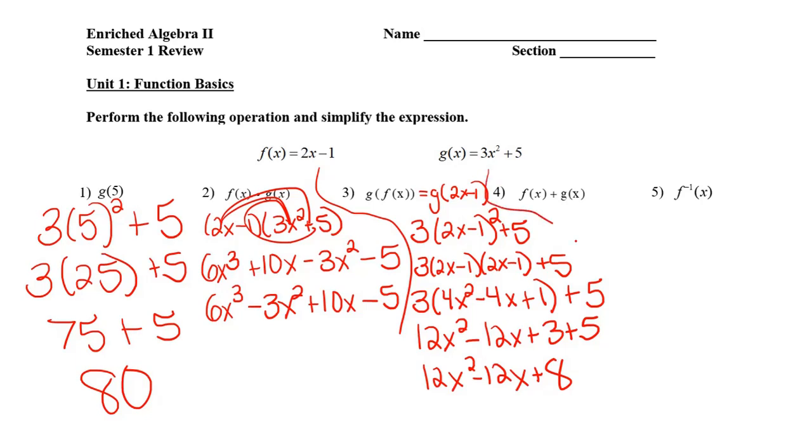Number 4, I need to add the two functions together. So I'm going to write the two functions, put a plus in the middle, and then I just need to combine some like terms. I'm going to put them in order too, so in standard form. So 3x squared is going to go first, followed by a positive 2x, followed by negative 1 plus 5, which is positive 4.